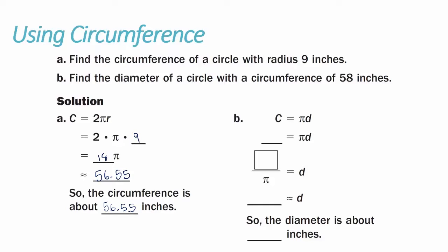Example 1B: find the diameter of a circle with a circumference of 58 inches. We're given the circumference and need to solve for the diameter. Using the formula C equals pi times D, we plug in 58 inches and solve for the diameter by dividing both sides by pi. 58 divided by pi is approximately 18.46, so the diameter is about 18.46 inches.